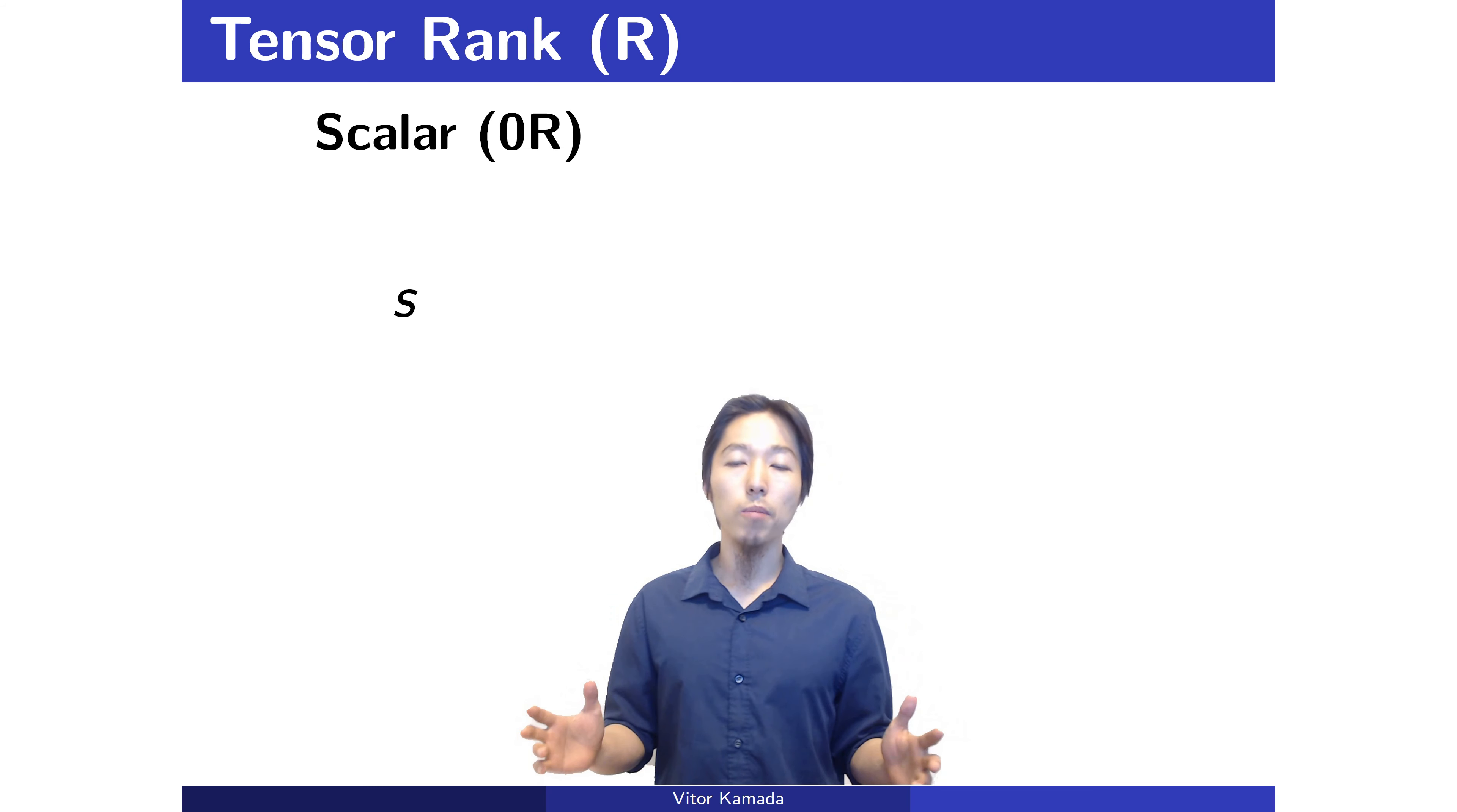Scalar is just a single number. It's a tensor of rank zero. In mechanics, scalar captures the magnitude of a phenomenon.